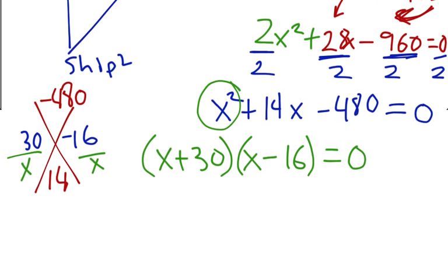And we're left with X plus 30 times X minus 16 equals 0. So, now we just have to solve that by setting each one equal to 0. So, I have X plus 30 equals 0. And then, X minus 16 equals 0.